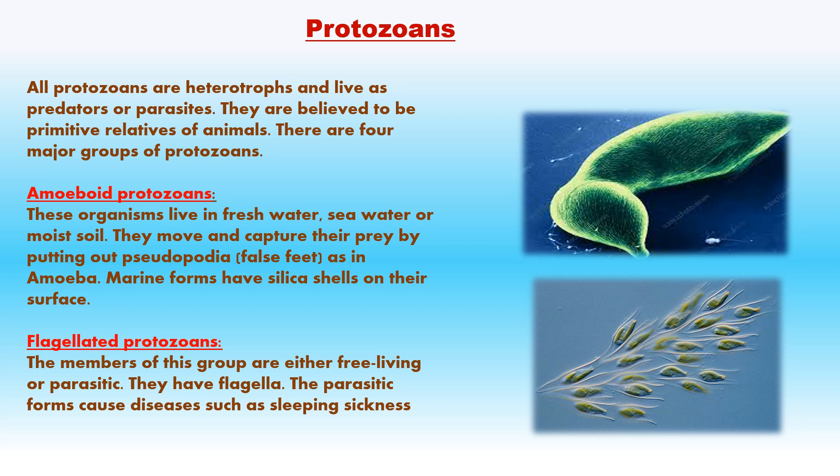Flagellated protozoans are either free-living or parasitic. They have a semi-rigid covering called pellicle that gives flexibility, and flagella that help in locomotion. The parasitic forms cause diseases in humans and animals. Example: Trypanosoma causes sleeping sickness in man.